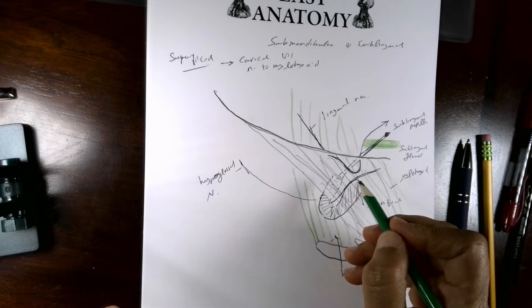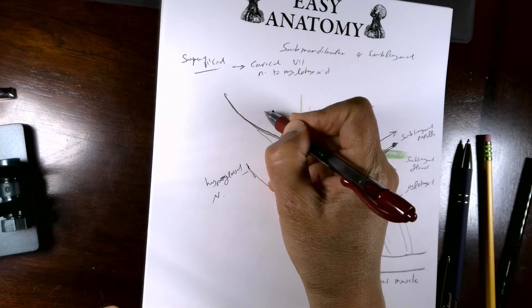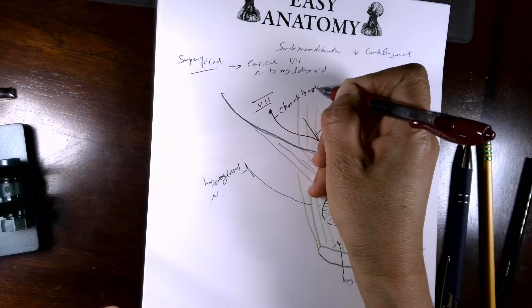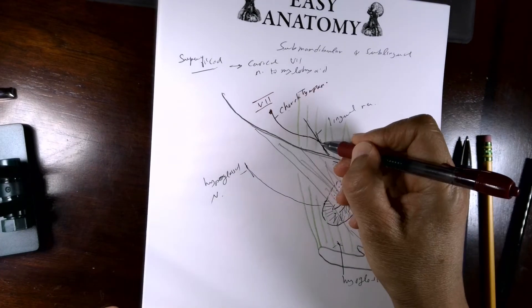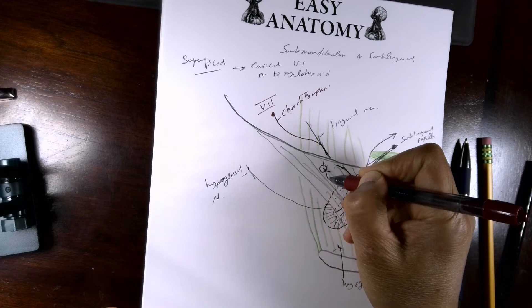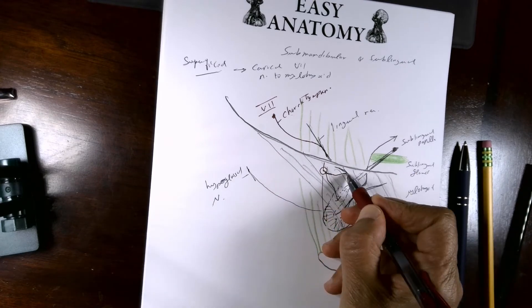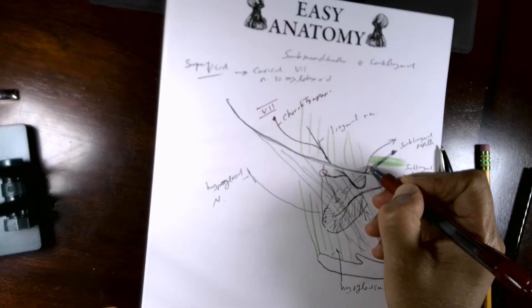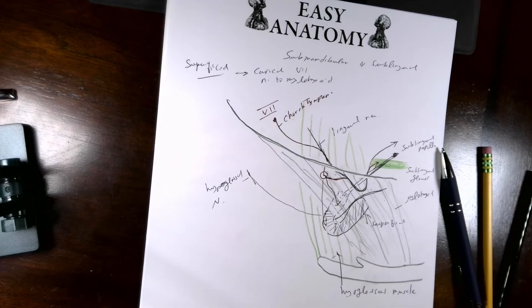The nerve supply of the gland comes from the chorda tympani, which is a branch of the facial nerve. The chorda tympani carries parasympathetic fibers, joining the lingual nerve. The preganglionic fibers stop at the submandibular ganglion, and postganglionic fibers go to the gland. Some postganglionic fibers rejoin the lingual nerve until they reach the sublingual gland.